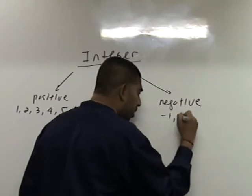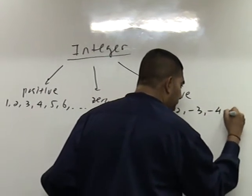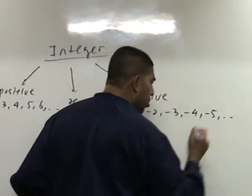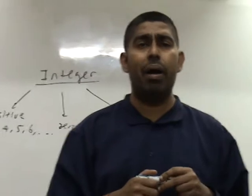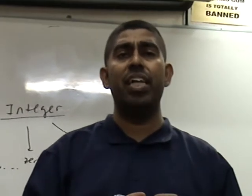Negative 1, negative 2, negative 3, negative 4, negative 5, and so on. So now you are learning something additional, which is negative integer.